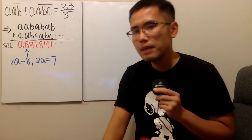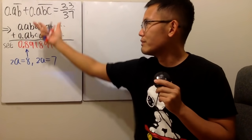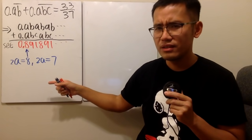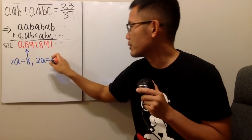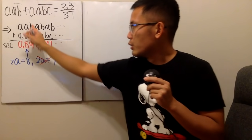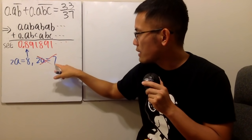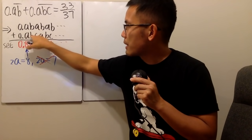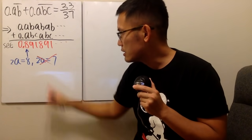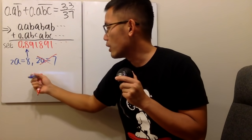However, that case is not possible because A, B, C are all whole numbers — so 2A equaling 7 is impossible. Therefore, 2A equals 8, which means A equals 4.